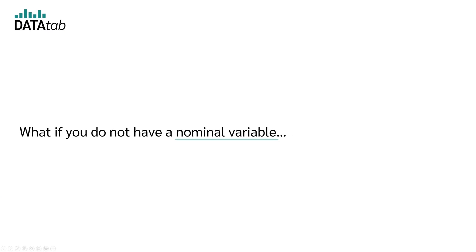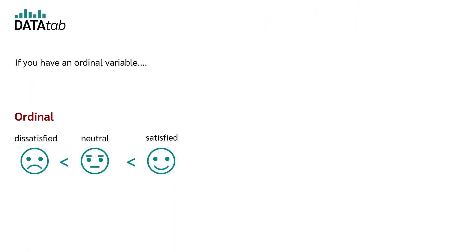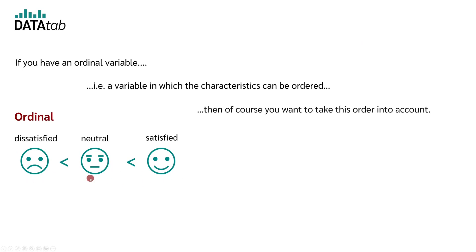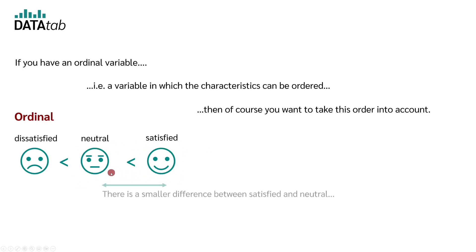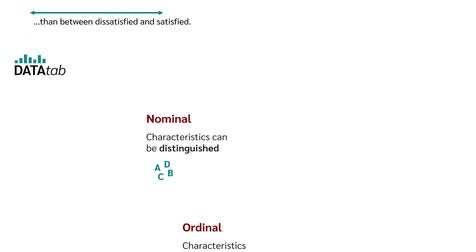What if you don't have a nominal variable but an ordinal one? If you have an ordinal variable — a variable in which the values can be ordered — then you want to take this order into account. For example, if your expressions are dissatisfied, neutral, and satisfied, there is a smaller difference between satisfied and neutral than between dissatisfied and satisfied. If you want to take the size of the difference into account, you have to use the weighted Cohen's kappa.